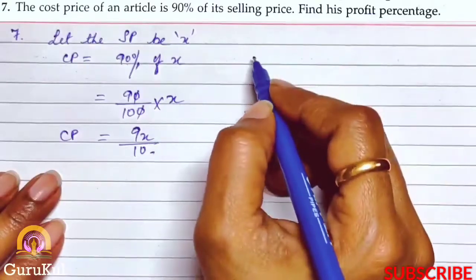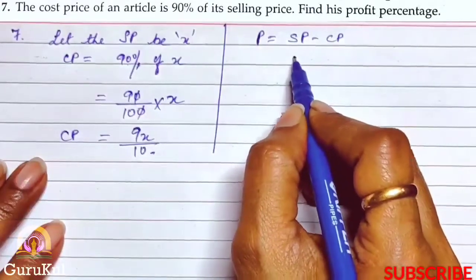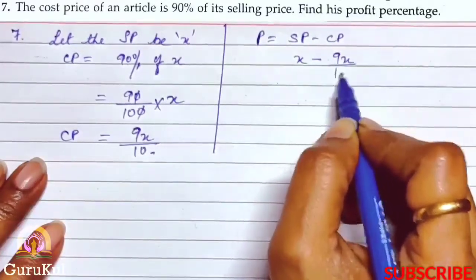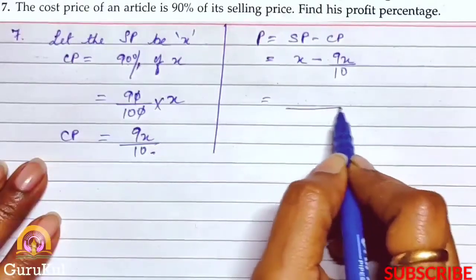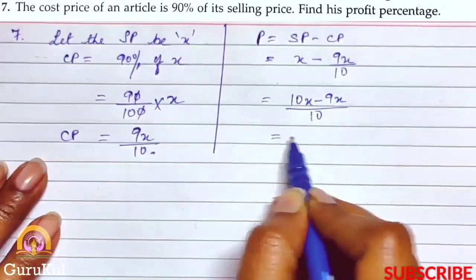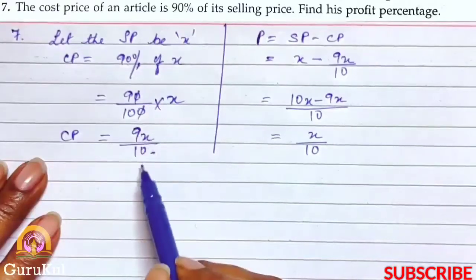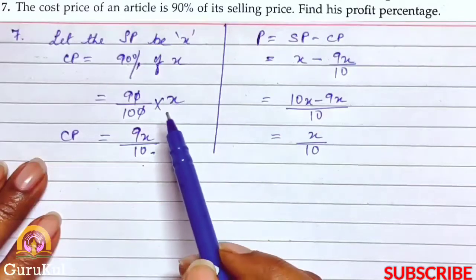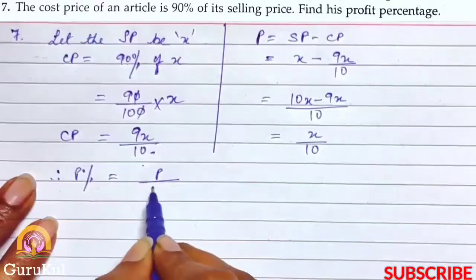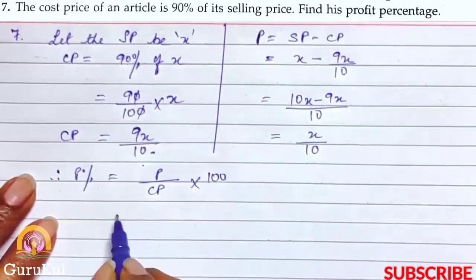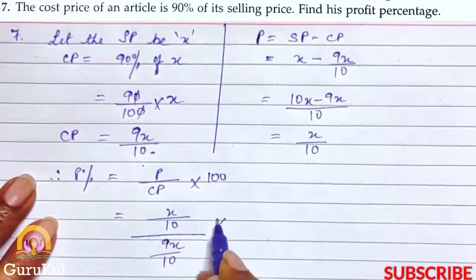We need to find profit percentage — meaning a profit was made. Profit is equal to SP minus CP, so that is x minus 9x/10. Taking LCM: 10x minus 9x gives us x/10. So profit is x/10, CP is 9x/10, and SP is x. Profit percentage formula: profit by CP into 100, so that is (x/10) divided by (9x/10) into 100.